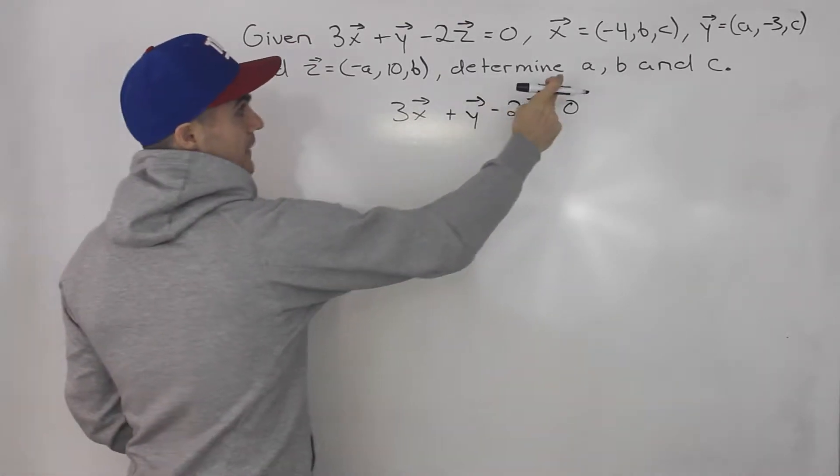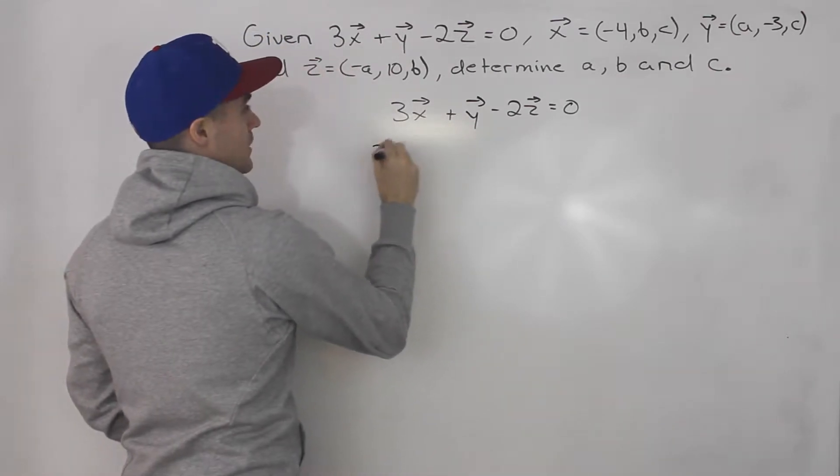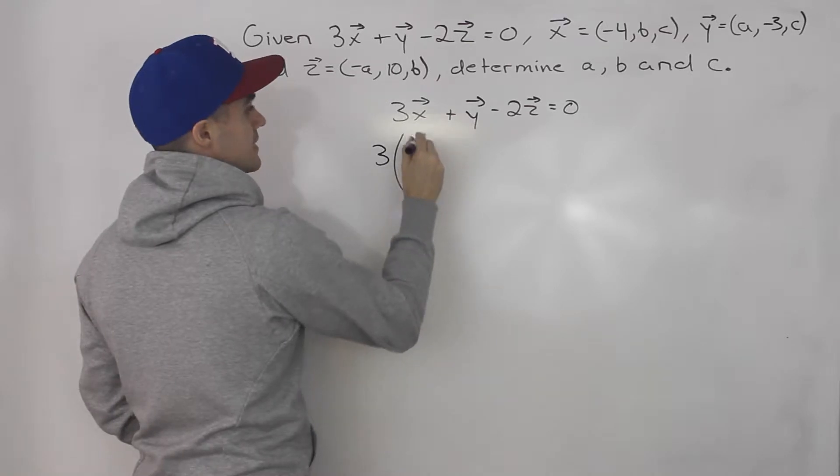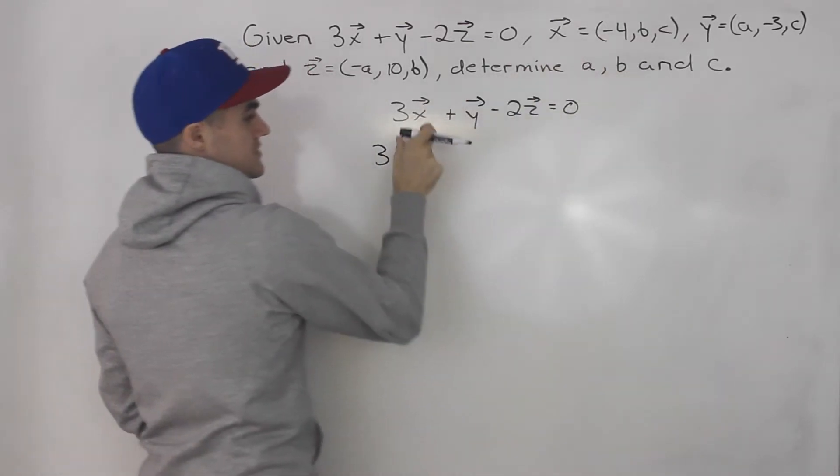So instead of having these sort of horizontal brackets, I like to show it vertically. So (-4, b, c), so this is vector x here. I just rewrote this in vertical form.